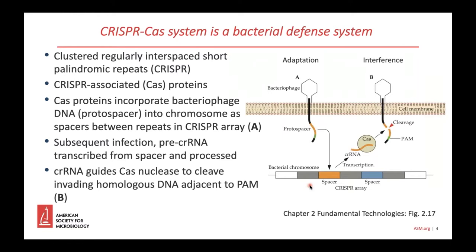During an infection, shown in panel A, Cas proteins incorporate fragments of bacteriophage genomes, known as protospacers, into the CRISPR array between the repeats. In the array these are known as spacers. On subsequent infection, shown in panel B, the array is transcribed to produce a long pre-CRISPR-RNA molecule, which is processed by an RNase to produce CRISPR-RNA, or crRNA. The mature CRISPR-RNA is bound by a Cas endonuclease and guides the complex to invading complementary DNA or RNA, depending on the system, and the endonuclease cuts the invading nucleic acid.